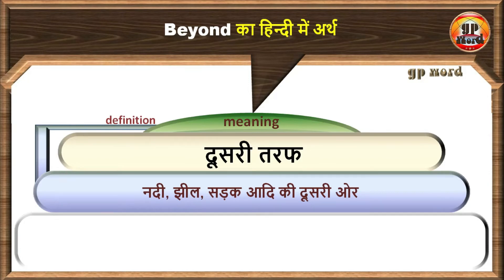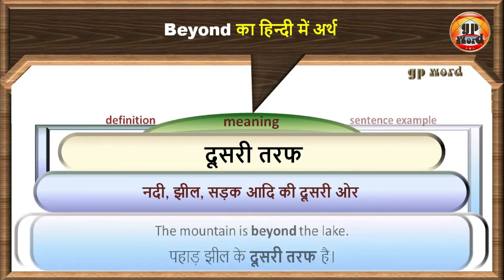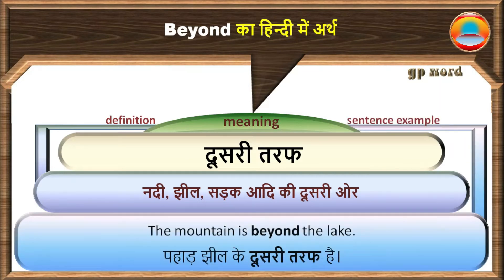Let's know with a sentence example. The mountain is beyond the lake. पहाड़ झील के दूसरी तरफ है। Next meaning.